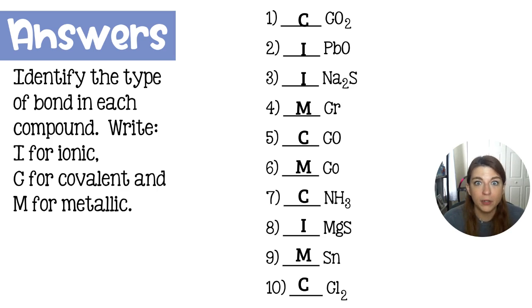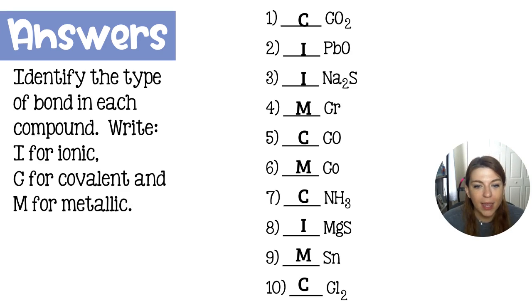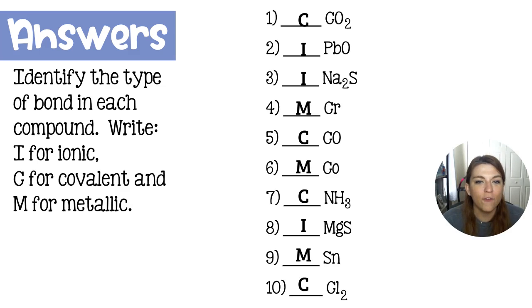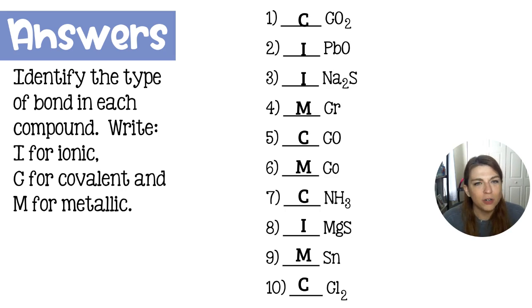Then we look for the metal, and if that metal is bonded to a nonmetal, it's going to have ionic bonds — look at 2, 3, and 8; all of those are metal bonded to a nonmetal. And lastly, a metal not bonded to anything — a chunk of metal all by itself — that is going to be 4, 6, and 9. Those are the metals chromium, cobalt, and tin. Those are just chunks of metal and their electrons are swimming around the sample, kind of bonding the metal atoms together.